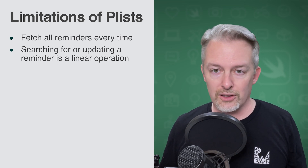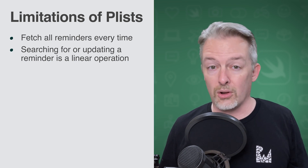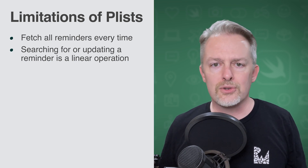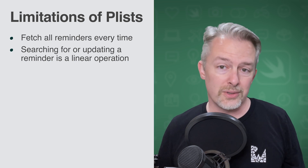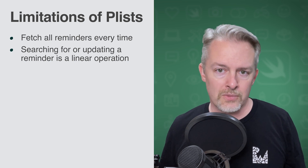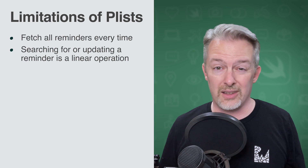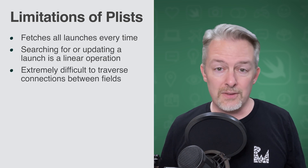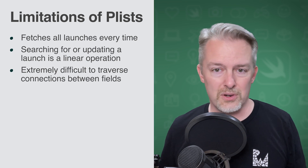When retrieving the launches from the plist file, you would have to fetch them all at once, because there's no way for you to easily decode partial documents. You would also have to figure out how to search this file and update entries. Even worse, creating relationships between types would be quite difficult.